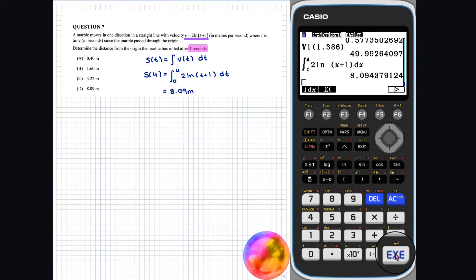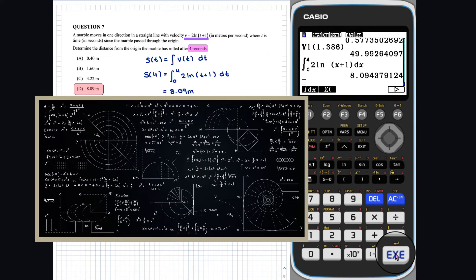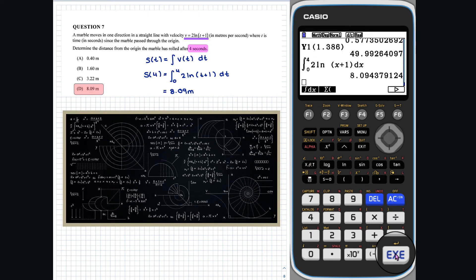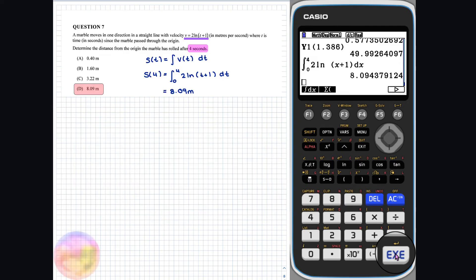So, in 4 seconds, the marble has rolled 8.09 metres. That is a fast marble. Notice here, we have used displacement and distance interchangeably. I hear you wondering, is that maybe against the laws of mathematics? Actually, well, maybe physics. Well, we are told that the marble moves in one direction, i.e. it doesn't change direction. So, in this case, the distance and displacement are the same. So, we didn't break any physics laws today.